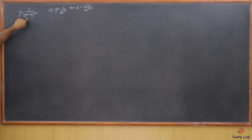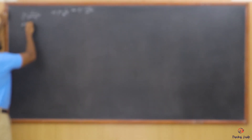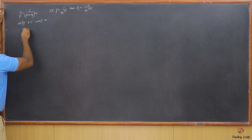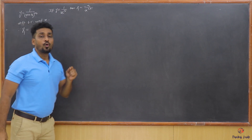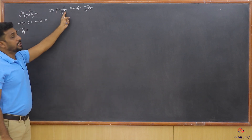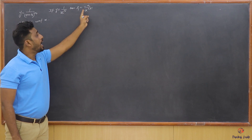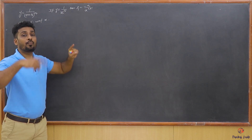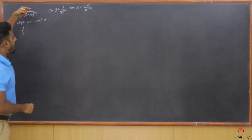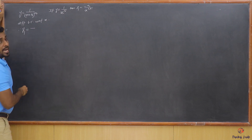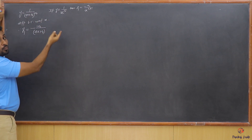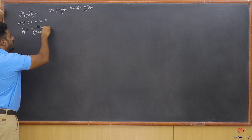We have y = 1/(ax+b)^m. Differentiating both sides with respect to x, we get y1. Now 1/(ax+b)^m is like 1/x^n. You get the negative sign, you get the power n, and in the denominator you write x raised to one power more — x^(n+1). So here 1/(ax+b)^m gives -m/(ax+b)^(m+1).